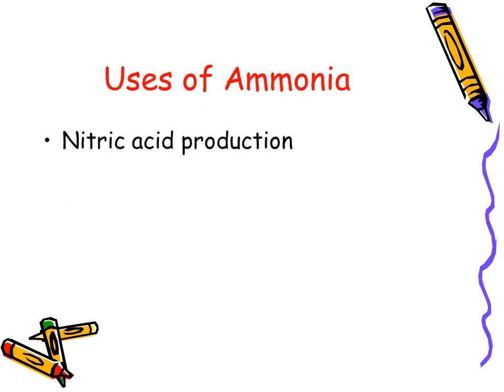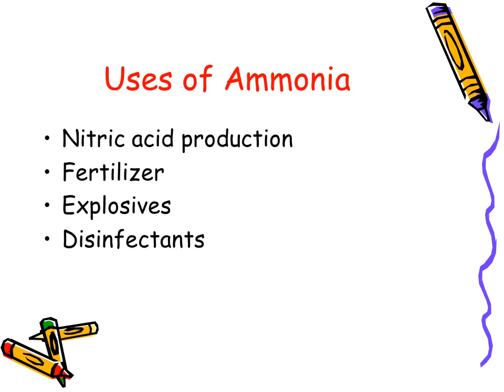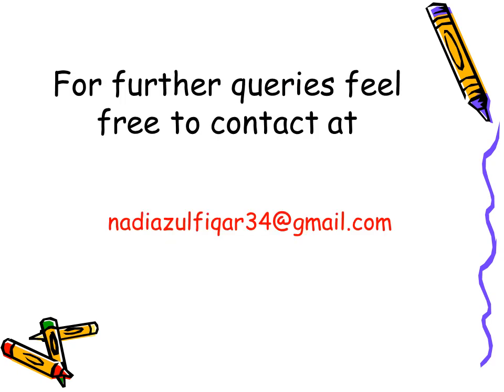Ammonia is a very important chemical because of its wide variety of uses as a raw material in the production of nitric acid, fertilizers, explosives, and disinfectants. That's all for today's lecture. Thank you.